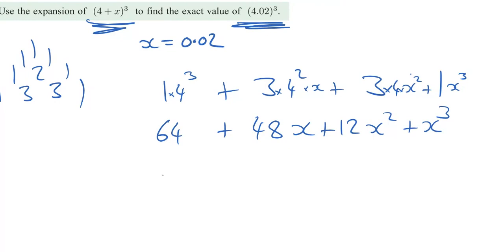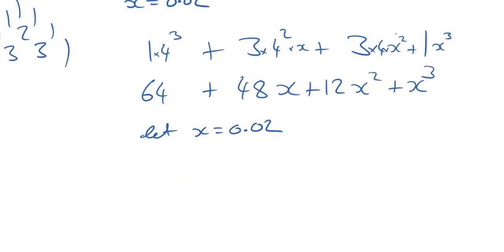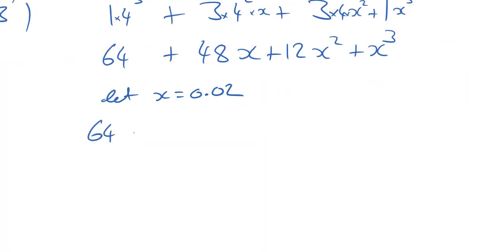Now, we're going to say let x equals 0.02, and we're going to put these values in. So we will have 64 plus 48 times 0.02 plus 12 times 0.02 squared plus 0.02 cubed.